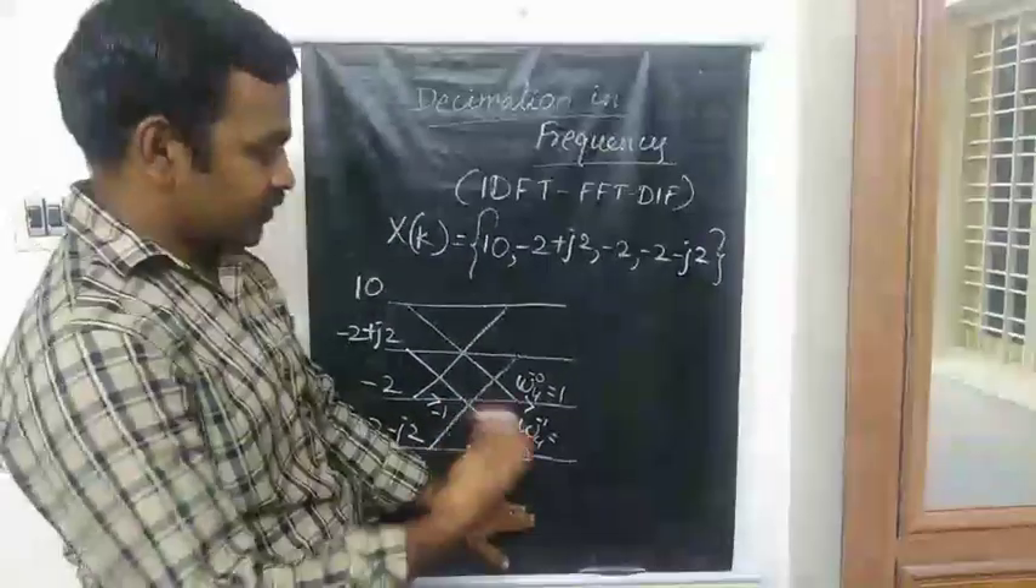Apply the twiddle factors: W4^0 that is 1, and W4^1. Actually this is W4^(-0), this is equal to W4^(-1), because we are using inverse of forward transform. Therefore here it becomes +j. So twiddle factors are applied. Now we can start the calculations. Here 10 is coming and here you are having -2, so 10 and -2 you are getting 8. At this point your output becomes 8.